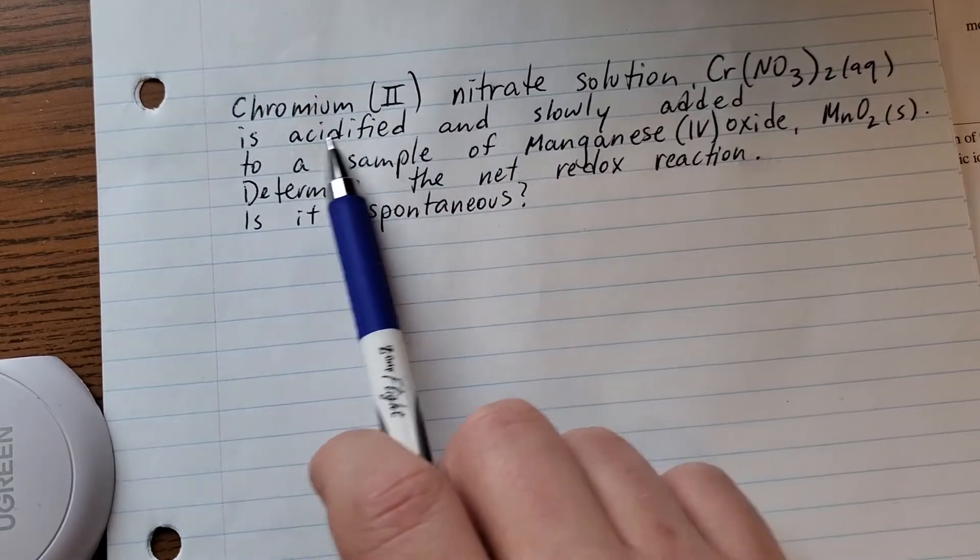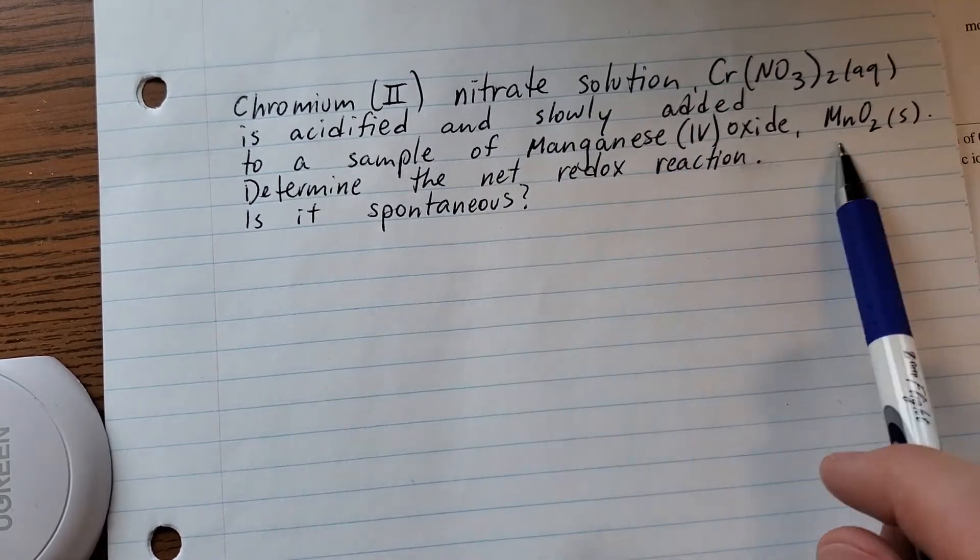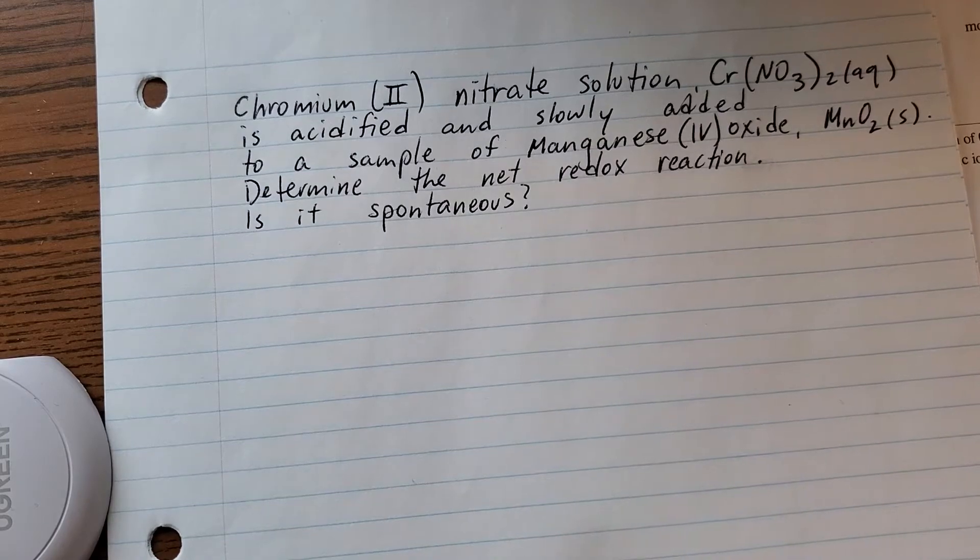So I've set this up: chromium(II) nitrate solution, Cr(NO3)2(aq), acidified and slowly added to manganese(IV) oxide, MnO2(s). We're going to determine the net redox reaction.